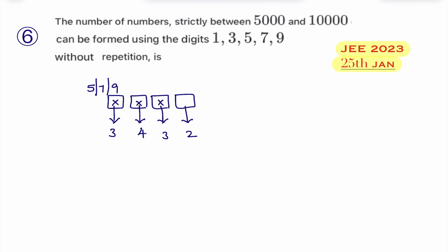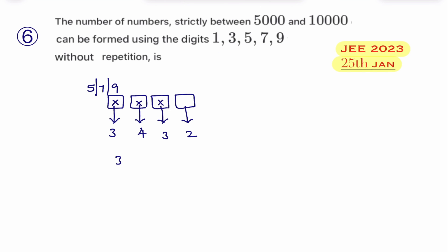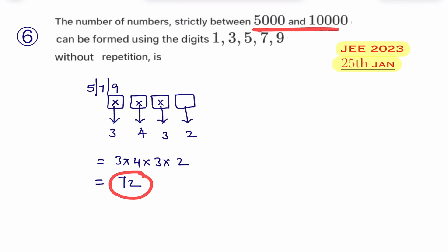Therefore, by the fundamental principle of multiplication, the total number of numbers between 5000 and 10,000 using these digits is 3 × 4 × 3 × 2. Multiplying: 3 × 4 = 12, 12 × 3 = 36, 36 × 2 = 72. Therefore, there are 72 such numbers between 5000 and 10,000.